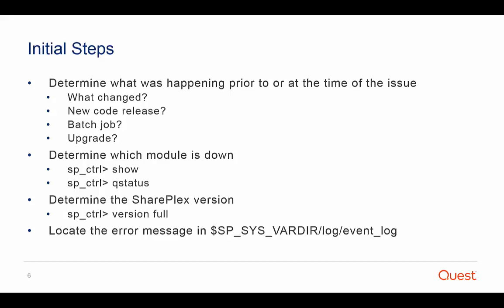The queue status and show commands in SP Control are good starting points. Then, determine the SharePlex version — this is important because the functionality may be different and there may be known issues resolved in later versions. The command to get the version is 'version full'. The next step is to review the event log, locate the error message, and cross-reference it with the information you got from show and queue status. You must identify the problematic process prior to moving to the next step.